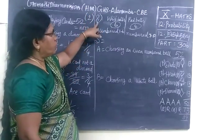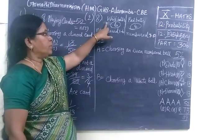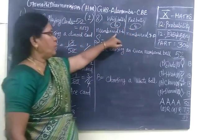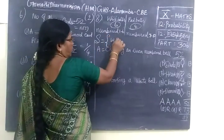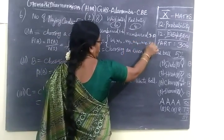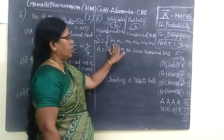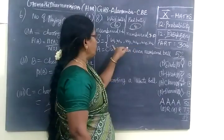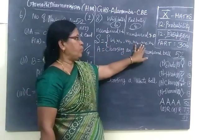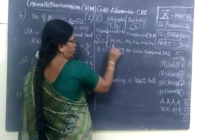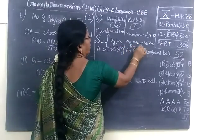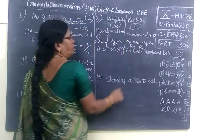Next we are finding question 8. We are given white cards and red cards — 6 white cards and 4 red cards. The 6 white cards are numbered from 1 to 6, so we write W1, W2, W3, W4, W5, W6. We have 6 white cards numbered 1 to 6, and 4 red cards numbered from 7 to 10. So totally we have 10 cards.